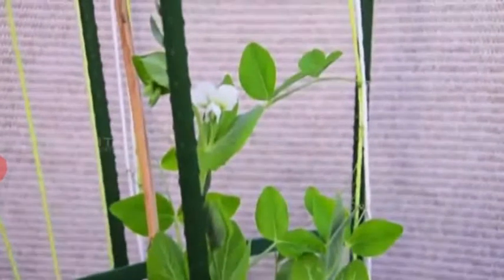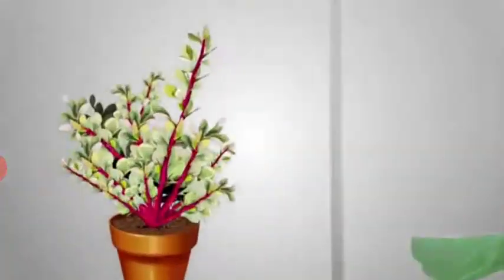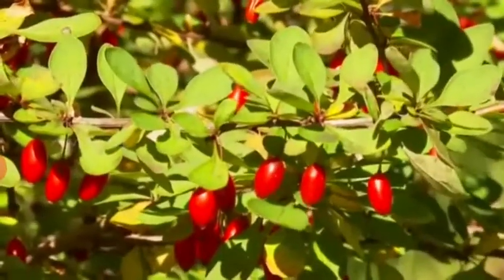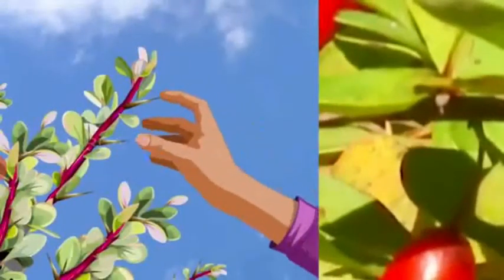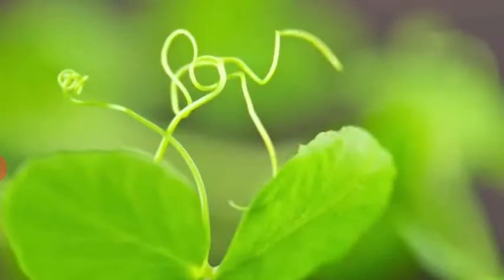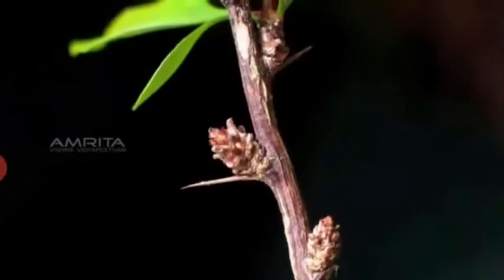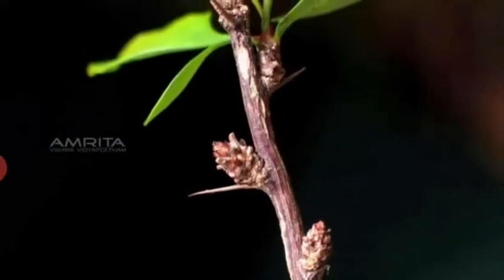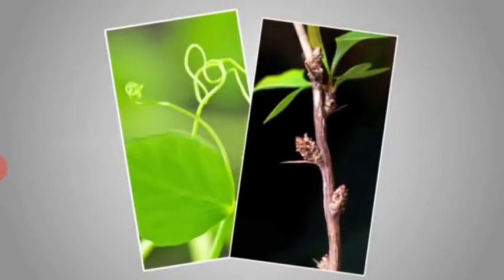The tendril of a pea is a modified leaf and is used for providing mechanical support for the plant. In the case of barberry, the leaves are modified into spines and are meant for protection. The tendril of a pea and spine of barberry originated from leaves, so they are homologous organs in plants but have different functions.